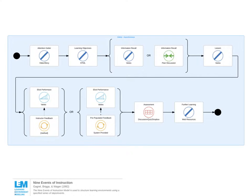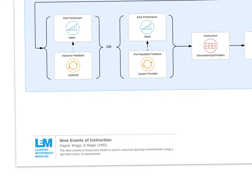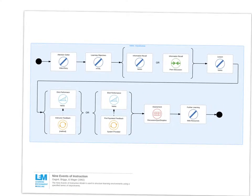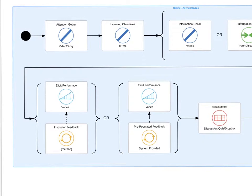The next model is titled the Nine Events of Instruction, commonly referred to as Gagne's Nine Events of Instruction. It's a series of steps that walk through a process of presenting instructional material. The nine events begin with an attention getter — a way to capture the learner's attention, perhaps through a video or a story.